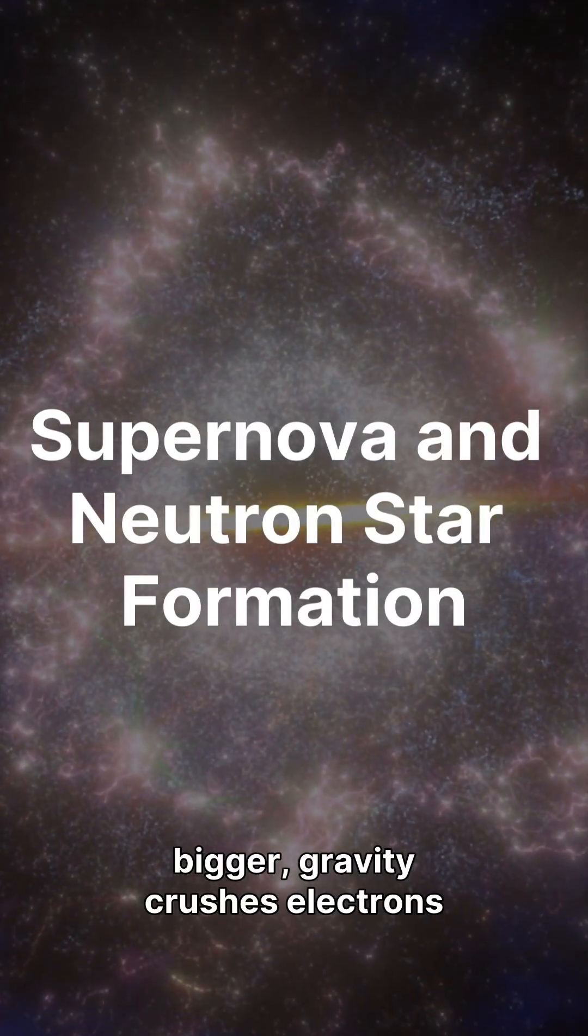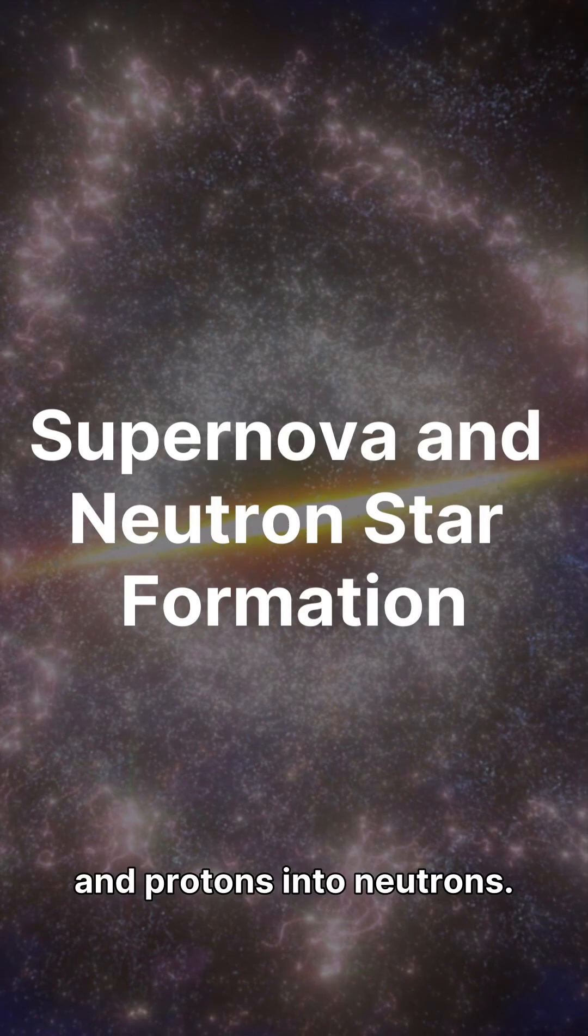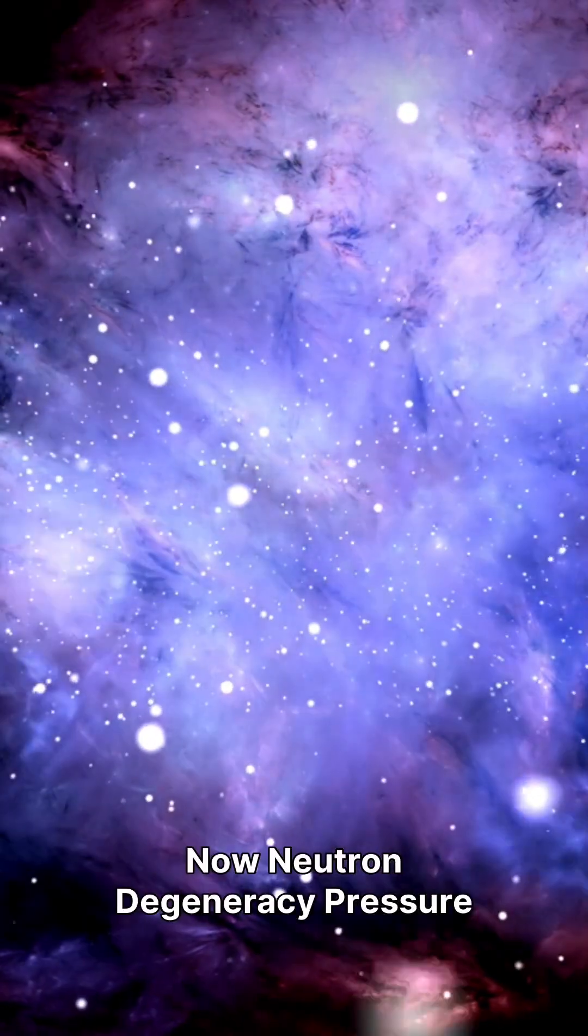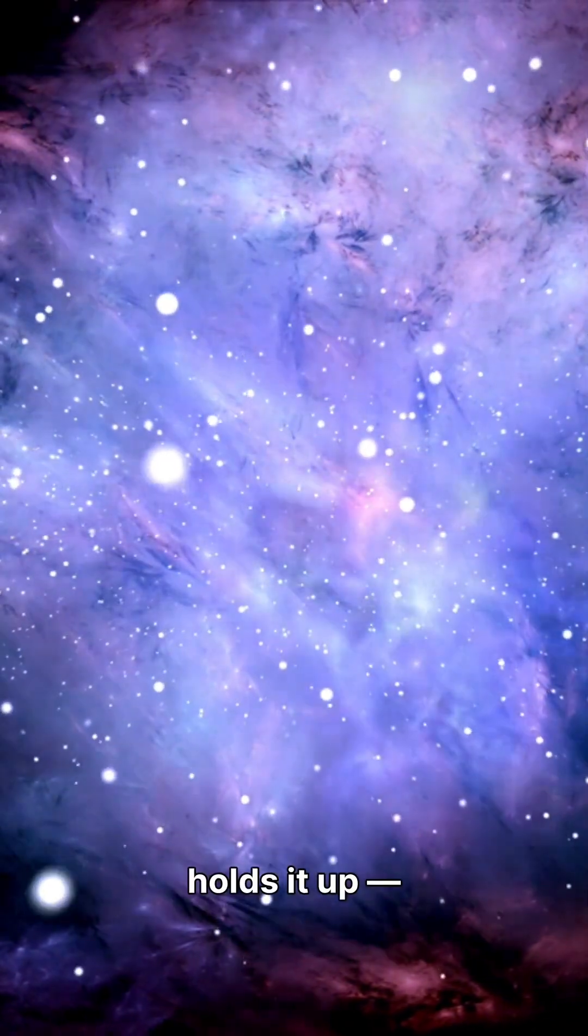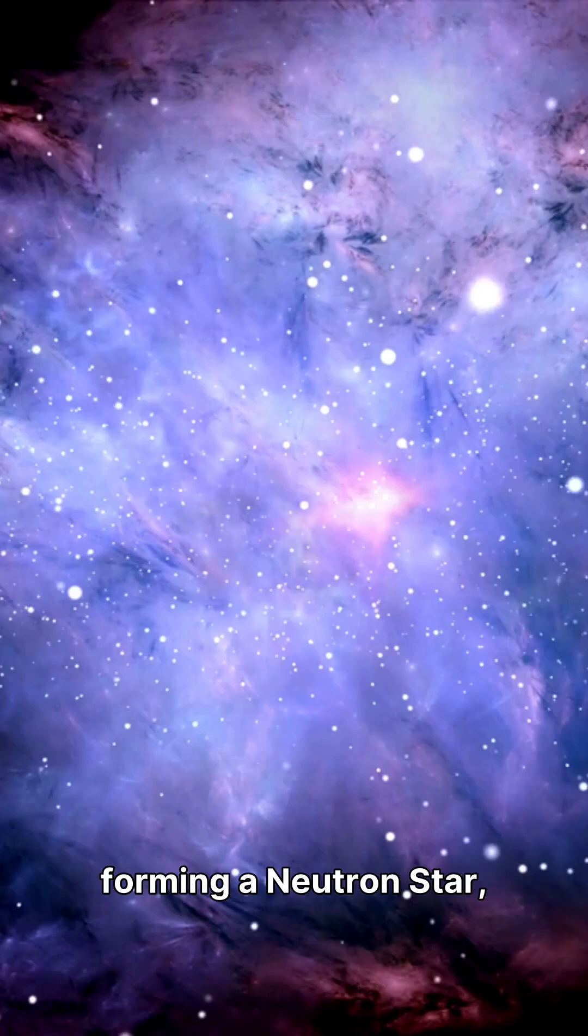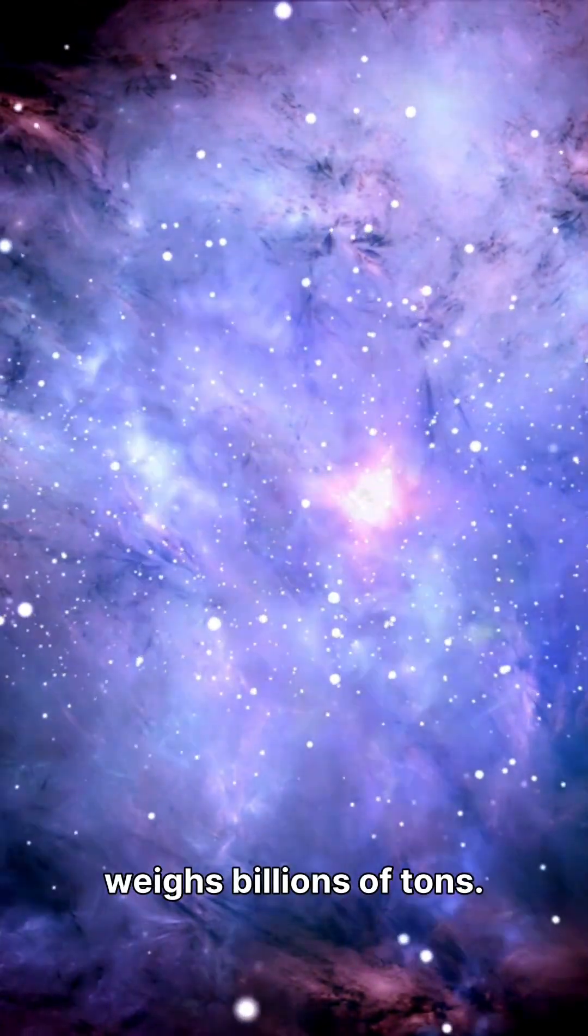If the star was bigger, gravity crushes electrons and protons into neutrons. Now neutron degeneracy pressure holds it up, forming a neutron star, so dense a teaspoon weighs billions of tons.